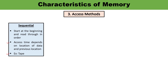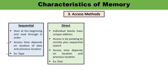The next access method is DMA — Direct Memory Access. This method allows input/output devices to access or retrieve data directly from main memory. Individual blocks have unique addresses, and access is done by jumping to the vicinity plus a sequential search. Access time depends on the location and the previous location. An example of direct access is disk.